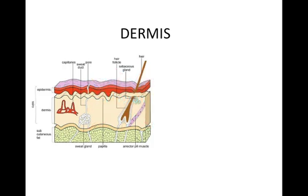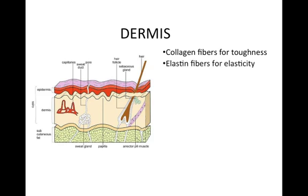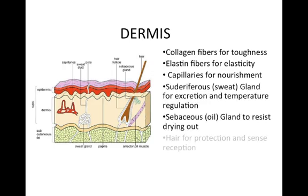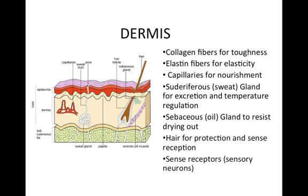The second layer is the dermis. The dermis is primarily made up of collagen fibers for toughness, providing a lot of protection and support. It also has elastin fibers for elasticity and capillaries for nourishment. Whereas the epidermis is avascular, the dermis is highly vascular — if you were to scratch yourself into the dermis layer, you're going to bleed. The dermis supports the sudoriferous glands, sebaceous glands, and hair, and houses all of the sense receptors — specialized sensory neurons that bring information into the central nervous system.